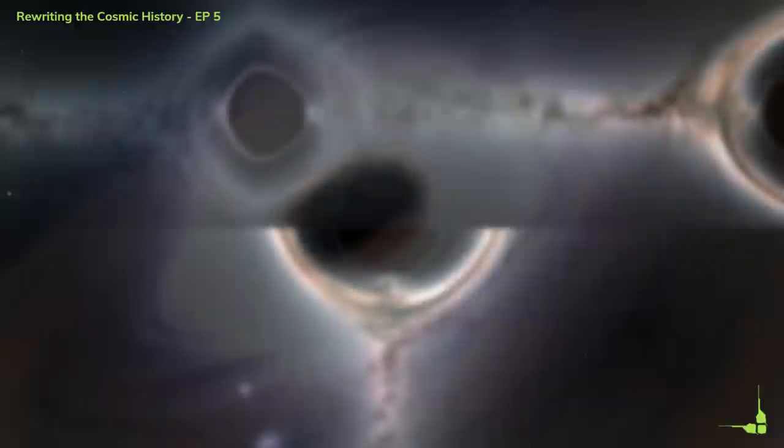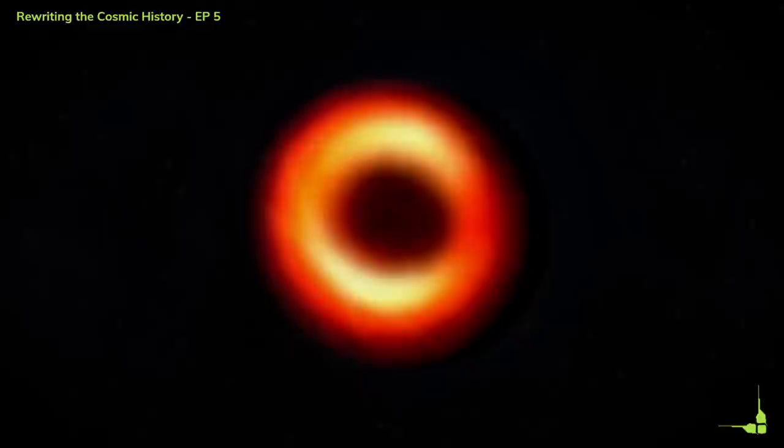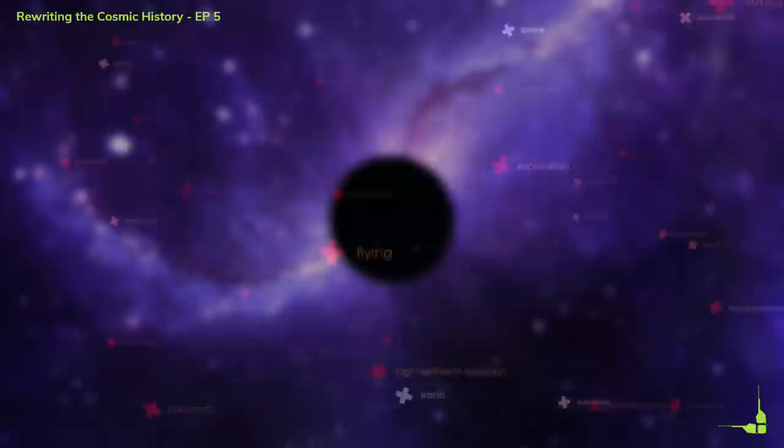In the early dark universe, as stars and galaxies were just beginning to form, monstrous entities emerged. These were the first black holes, born from the remnants of massive stars or the collapse of dense matter. Devourers of all in their path, even light itself, they cast a shroud of darkness upon the cosmos, forever altering our understanding of the universe's immense power and mysteries.